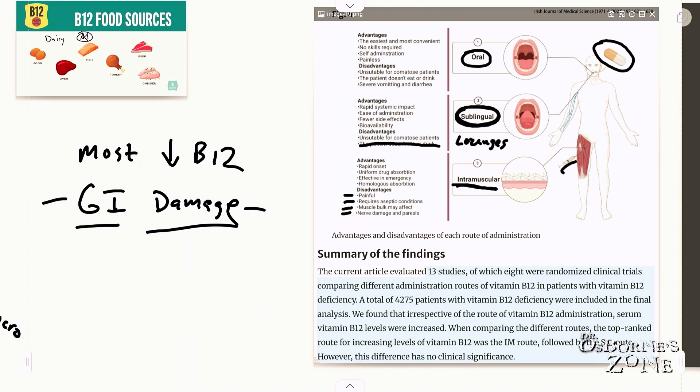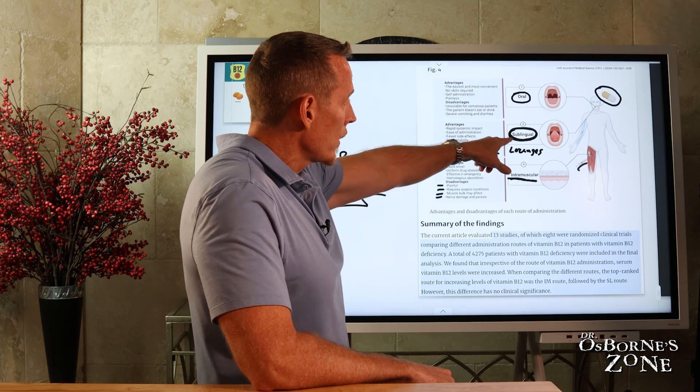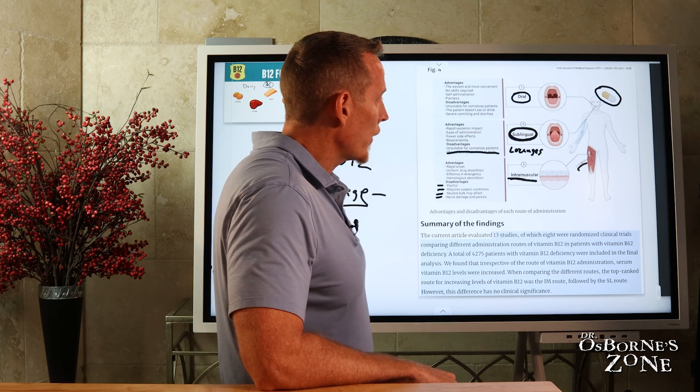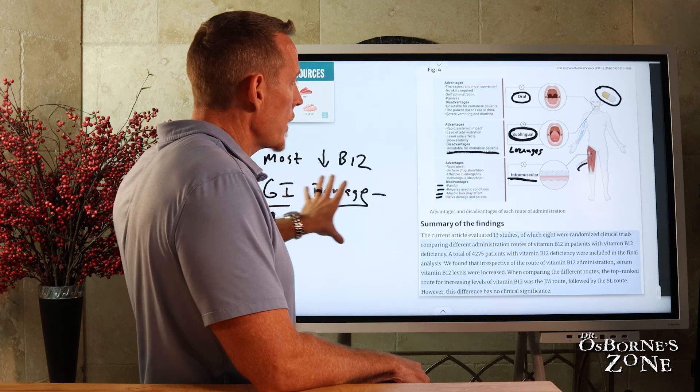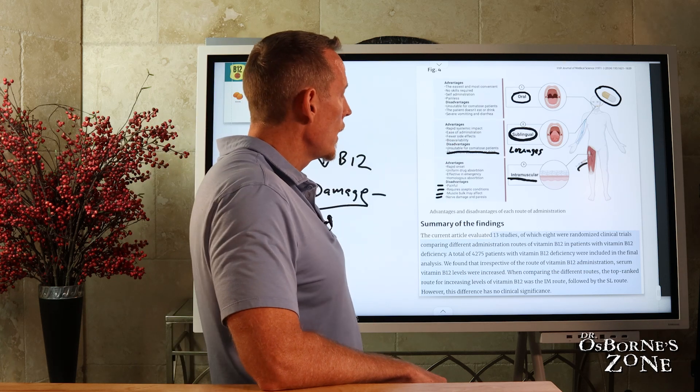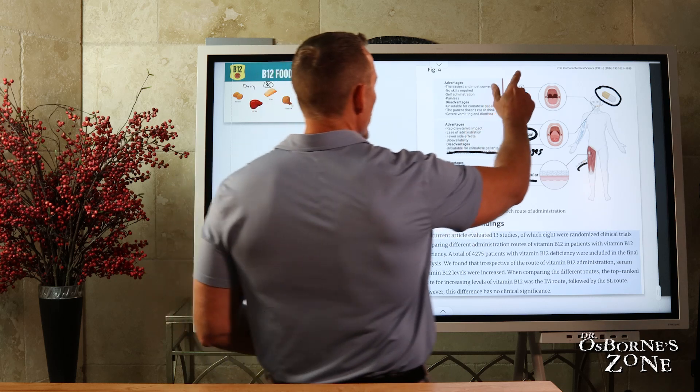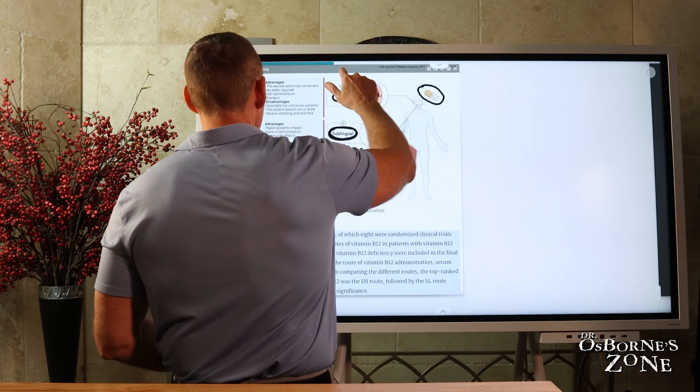So sublingual being basically, for all intents and purposes, just as effective. So if you're on the fence about these routes, my opinion in clinical experience is that number two is fine. It'll correct those of you that have that GI damage, it'll still correct the deficiency perfectly fine without the need to have to jab yourself with a needle on a regular basis. And to me, that's a far easier proposition.